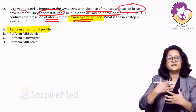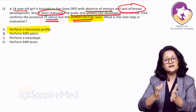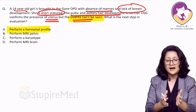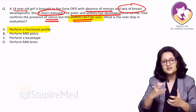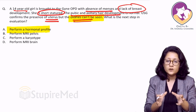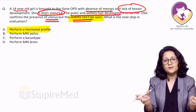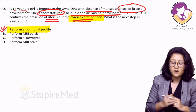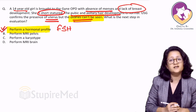MRI pelvis, karyotype, MRI brain — these are all investigative modalities in the evaluation of primary amenorrhea with lack of breast development or secondary sexual characteristics. But they will come much later. Primarily, we want to distinguish whether it is an ovarian problem or a hypothalamic or pituitary problem, by performing a hormonal profile mainly focusing on FSH levels.